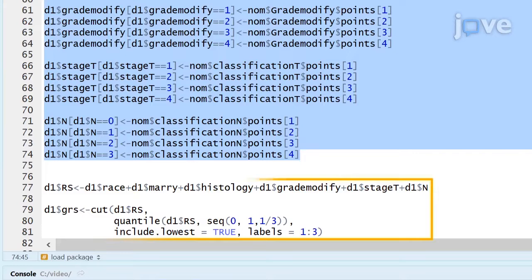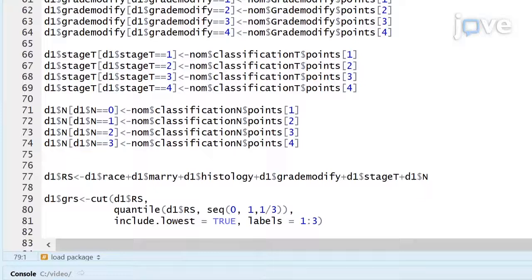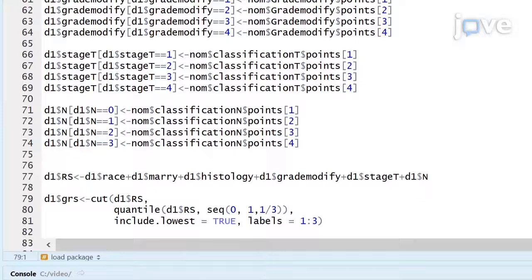Then draw the forest plot, obtaining the hazard ratio, lower confidence interval, and upper confidence interval with the CRR function.